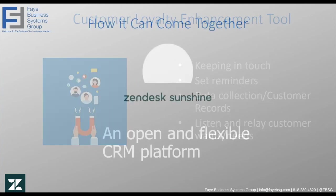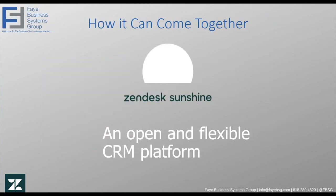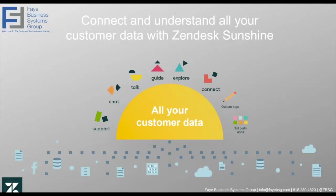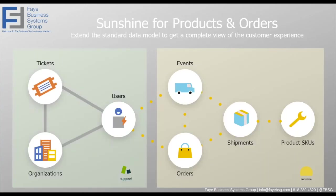So how can this all come together? Here's an example: Zendesk Sunshine. It's an open and flexible CRM platform that connects all the pieces for you. Whether you're using all of Zendesk's different features or you want to link in social media accounts, custom apps, or third-party applications, Sunshine powers all of Zendesk's products. You can also use it to power custom applications or services. Since we're talking about manufacturing and logistics, I did want to show you Sunshine for products and orders — you can extend the standard data model to get a complete view of the customer experience.